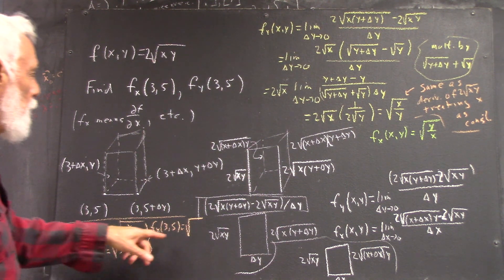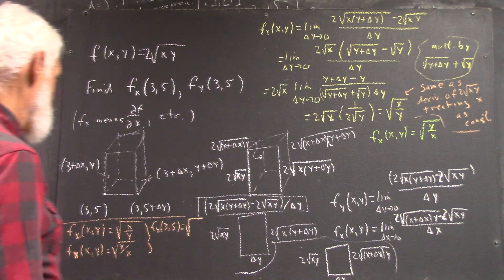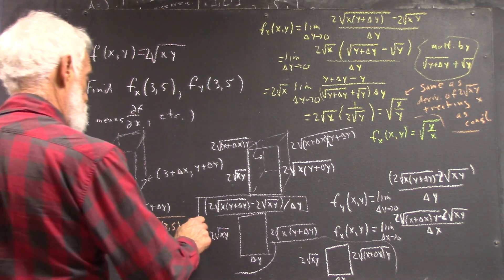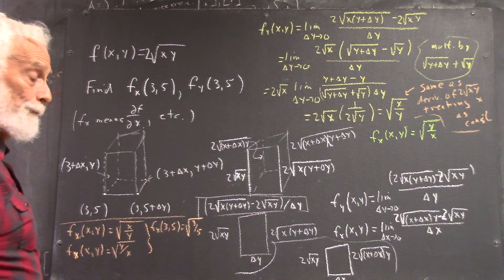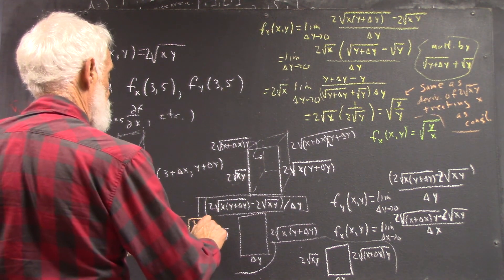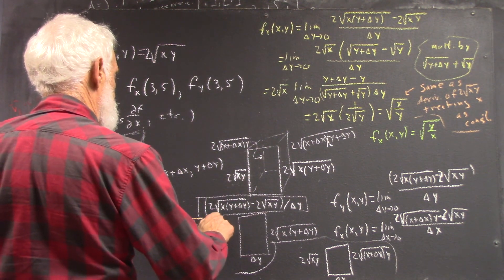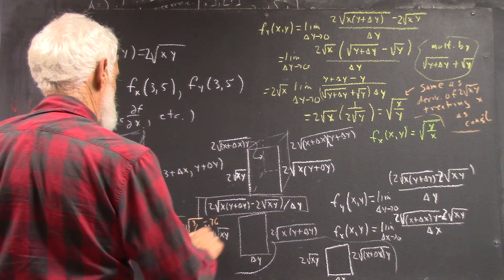Okay, then fy of 3, 5 is what? It's the square root of x over y, square root of 3, 5, right? Okay, square root of 0.6, approximately 0.76, maybe 0.77.